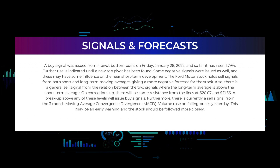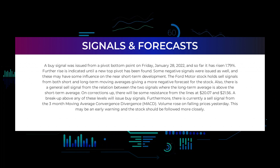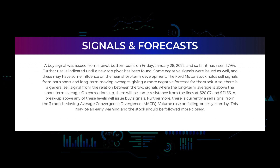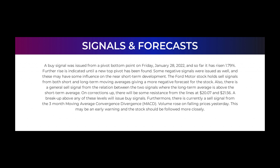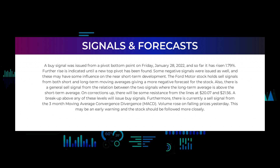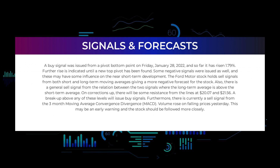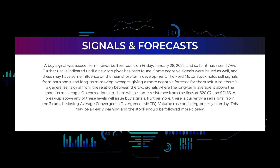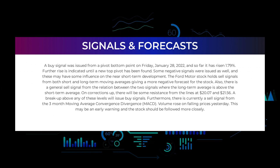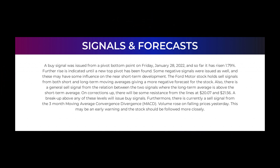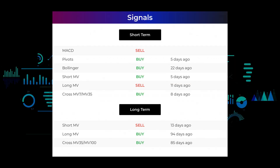Some negative signals were issued as well that may have influence on near short-term development. Ford Motor holds sell signals from both short and long-term moving averages, giving a more negative forecast. There is also a general sell signal from the relation between the two signals, where the long-term average is above the short-term average. On corrections up, there will be resistance from the lines at $20.07 and $21.56 — a breakout above either level will issue buy signals. Furthermore, there is currently a sell signal from the three-month MACD. Volume rose on falling prices yesterday, which may be an early warning.